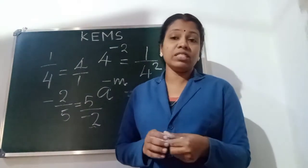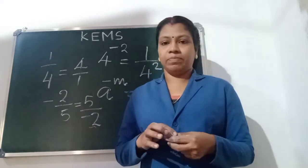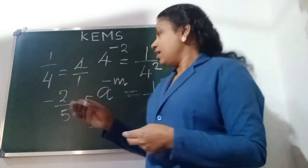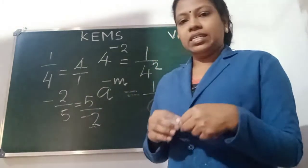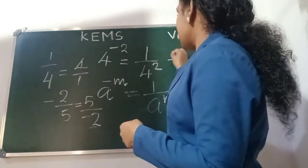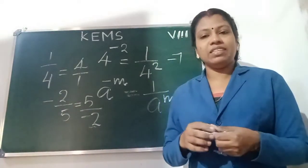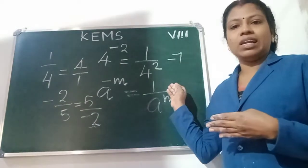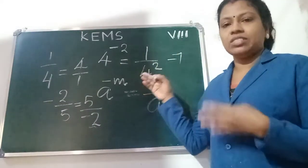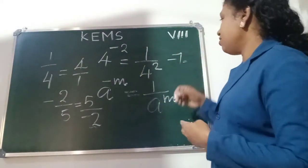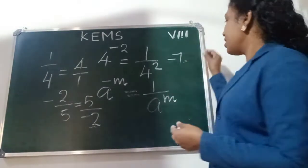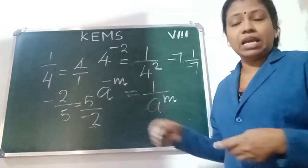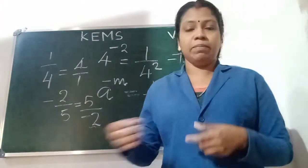Multiplicative inverse means reciprocal of the fraction. What about the multiplicative inverse of minus 7? The reciprocal is 1 by 7, so the multiplicative inverse of minus 7 is 1 by minus 7 — with the same sign. Just the fraction inverted.